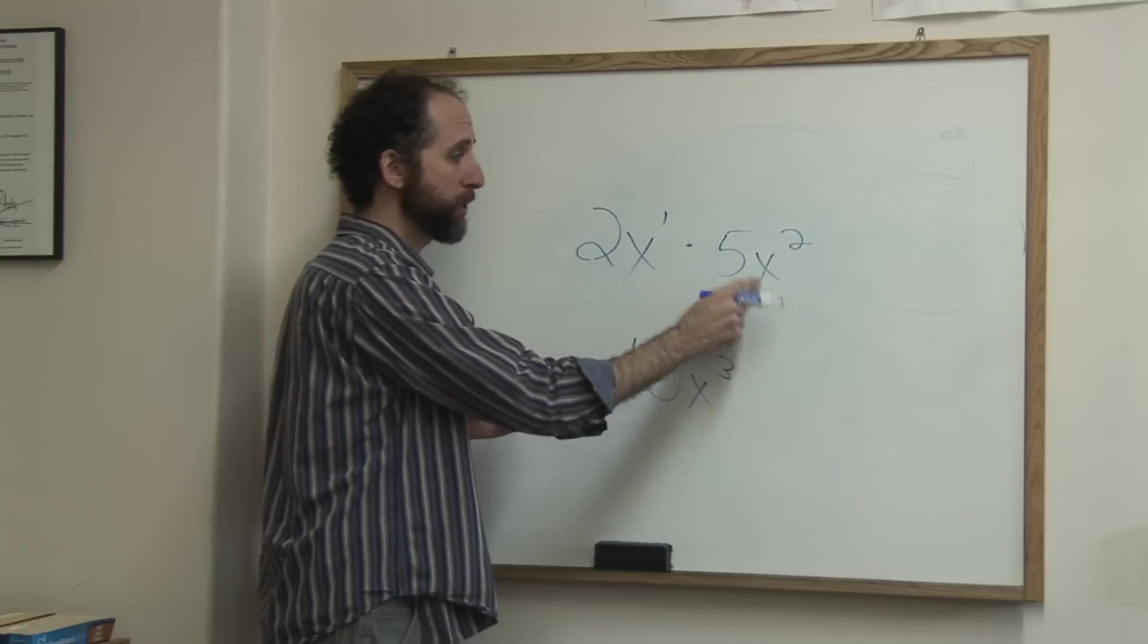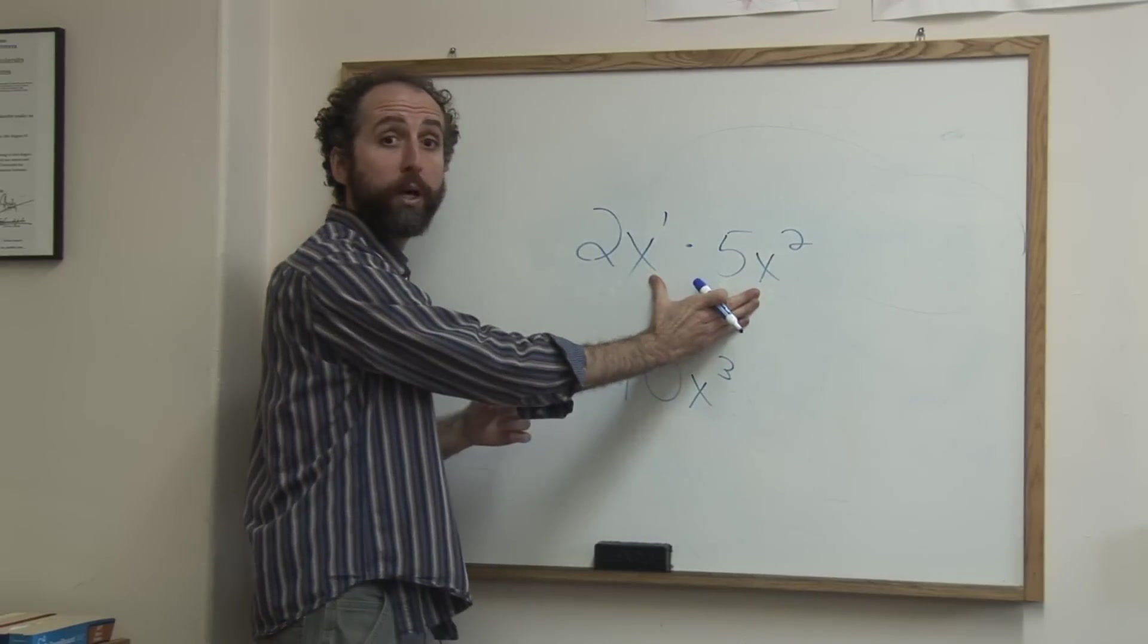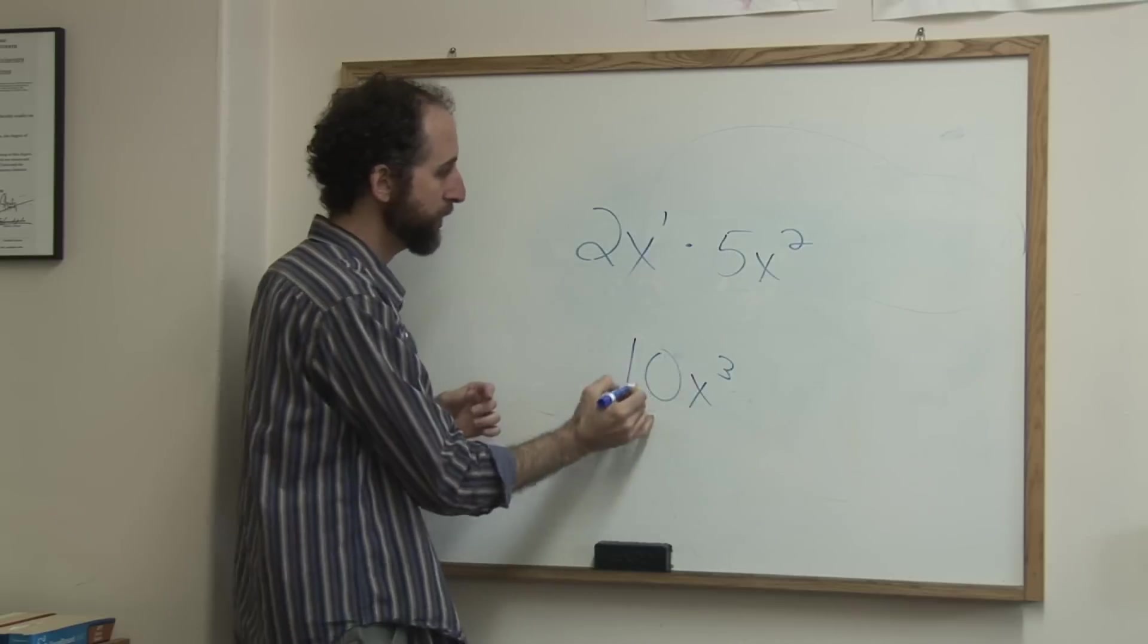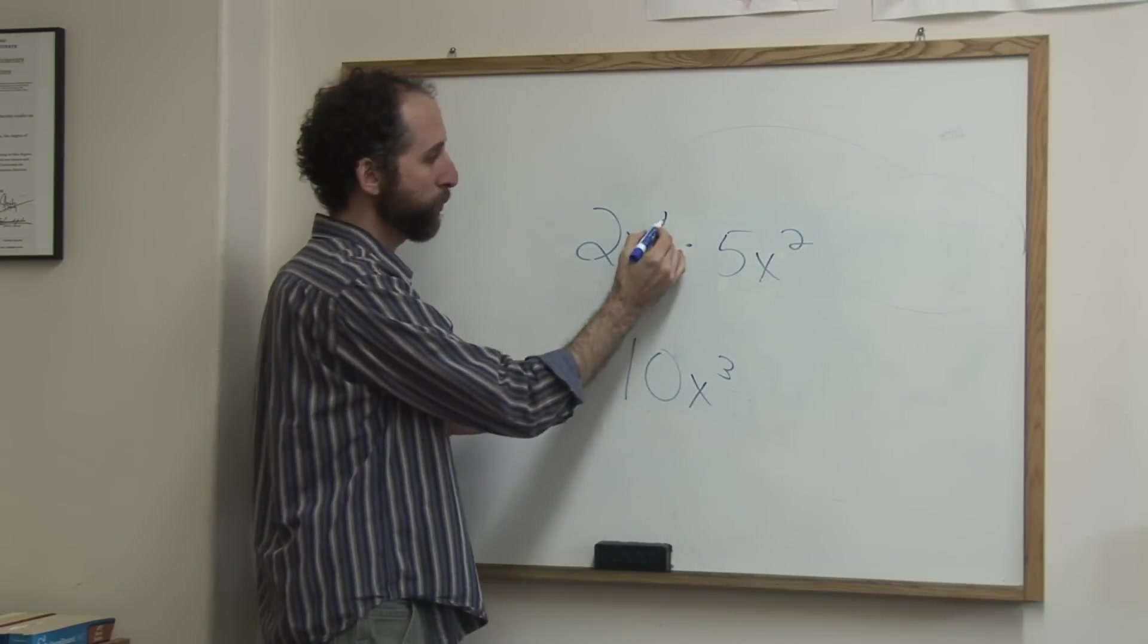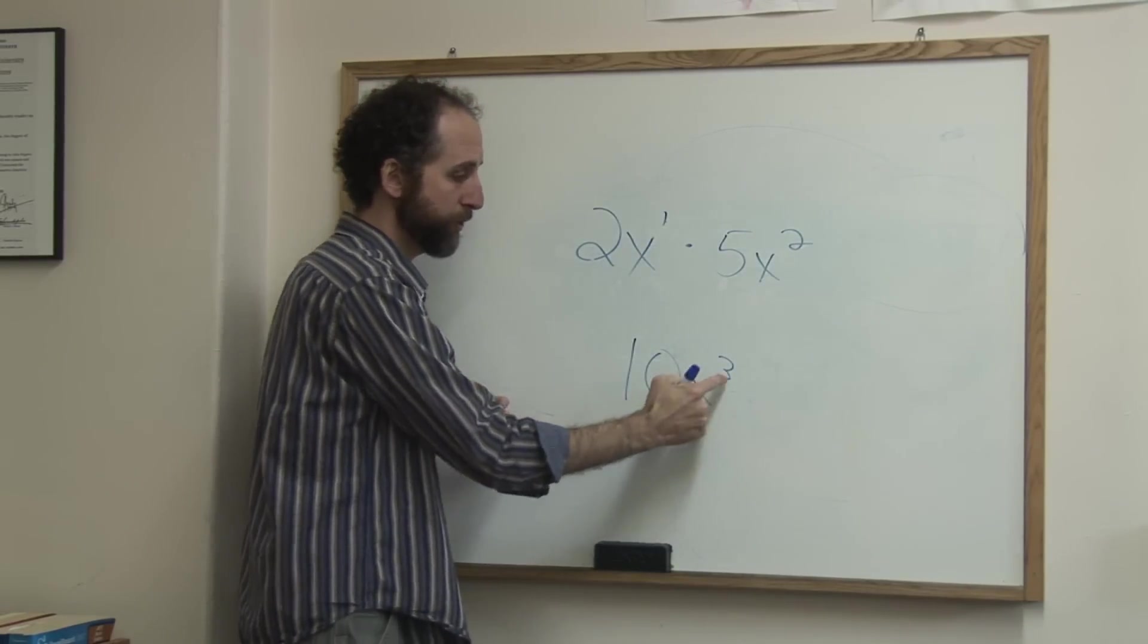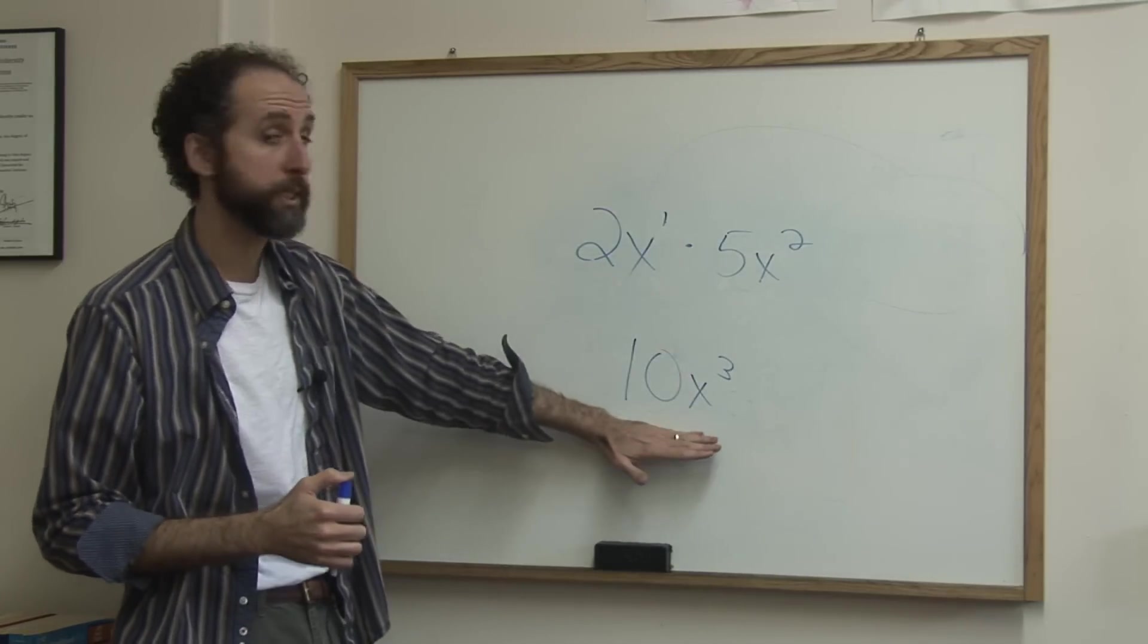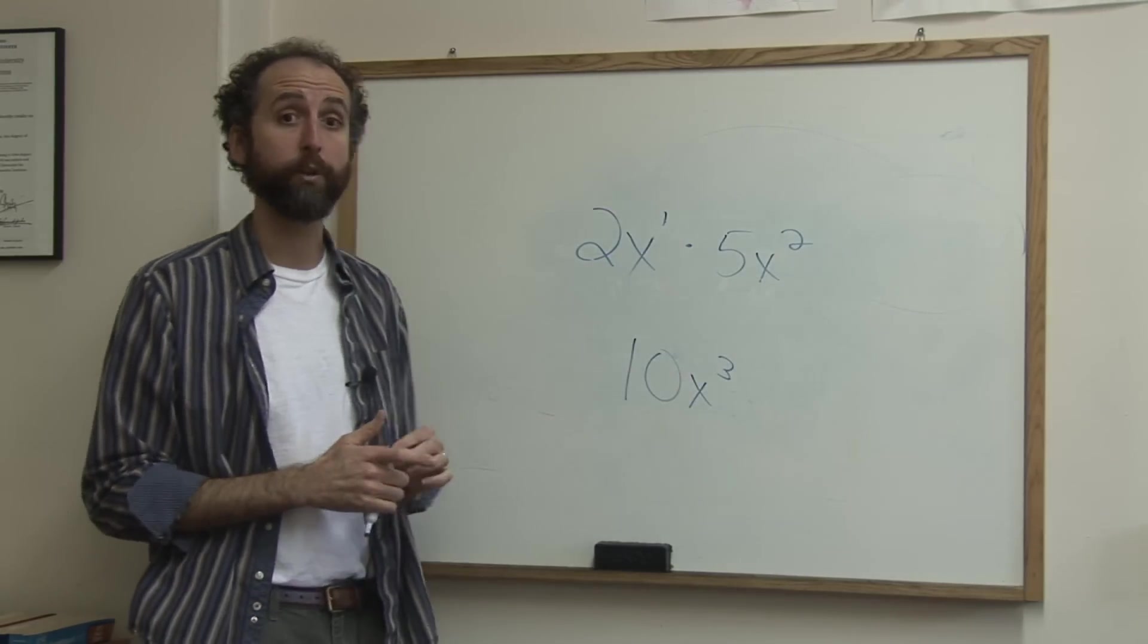And when we multiply variables, we add the exponents. So 2 times 5 is 10. x times x squared is 1 plus 2 is 3, so it's x to the third. So this monomial times that monomial is 10x to the third.